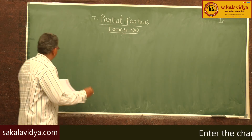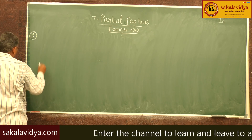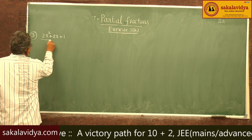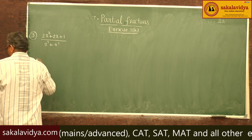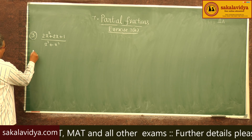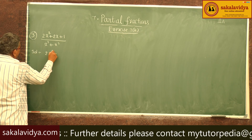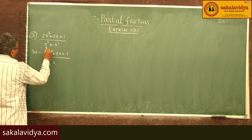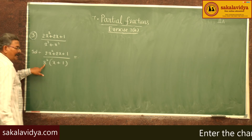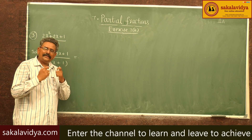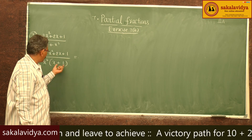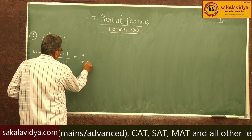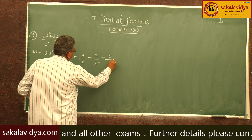Third problem: resolve (2x² + 2x + 1) / (x³ + x²) into partial fractions. The denominator can be written as x²(x + 1), taking x² common. Since x² means x is a repeated linear factor for 2 times, we get 2 partial fractions, and for the non-repeated linear factor (x+1) we get 1 more. So we write: A/x + B/x² + C/(x+1).